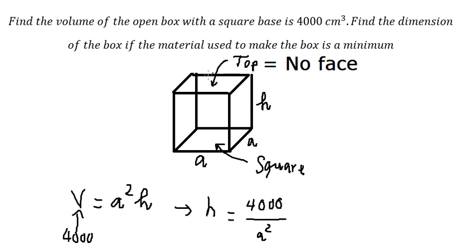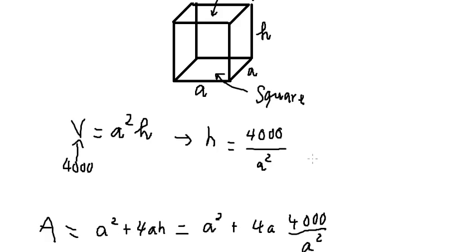So that means the size should be equal to 20. And for the height, we divide 4000 by 20 squared, and we get 10.